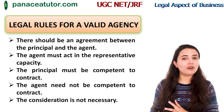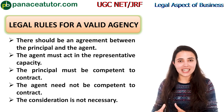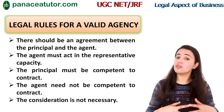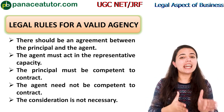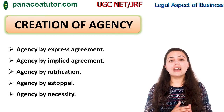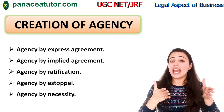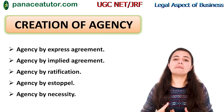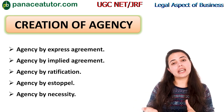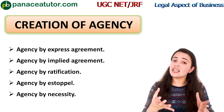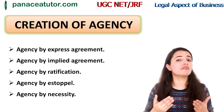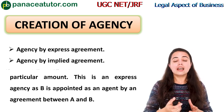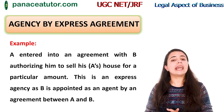Those were the legal rules required to create a valid agency. Now we will learn how an agency can be created. The agency can be created by express agreement, by implied agreement, by ratification, and by estoppel. We will now learn each of these in detail. The first is agency by express agreement.